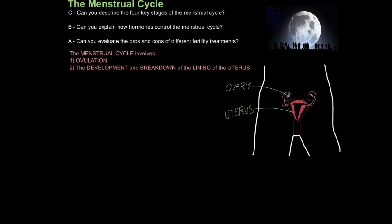The menstrual cycle involves two things. Firstly, ovulation — this is when an egg cell is released from the ovaries. And secondly, the development and breakdown of the lining of the uterus, or the endometrium. Throughout the menstrual cycle, it will start to build up, then wear away, and then shed completely.